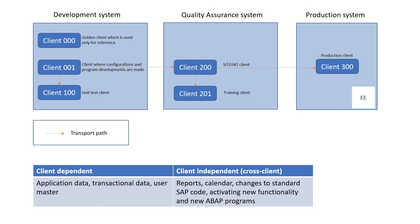Now let's take a look at the change management process. Changes that are created in one client can be transported to another client within the same SAP system or to a different SAP system. A change can be either a configuration change that is client dependent, or a workbench change that is client independent. Changes are transported among clients using a virtual container called transports — one of the most commonly used terms in the SAP ecosystem. A system called Change and Transport System, or CTS, is used to manage and monitor all movement of transports between SAP systems.